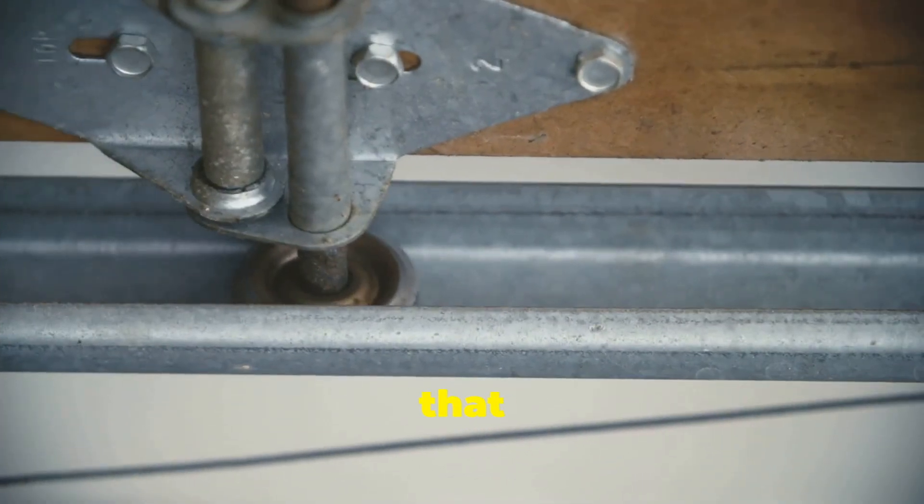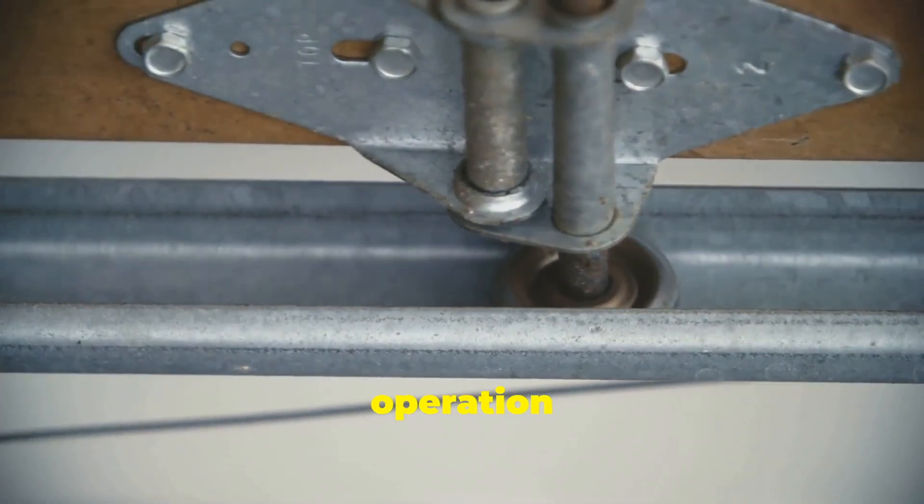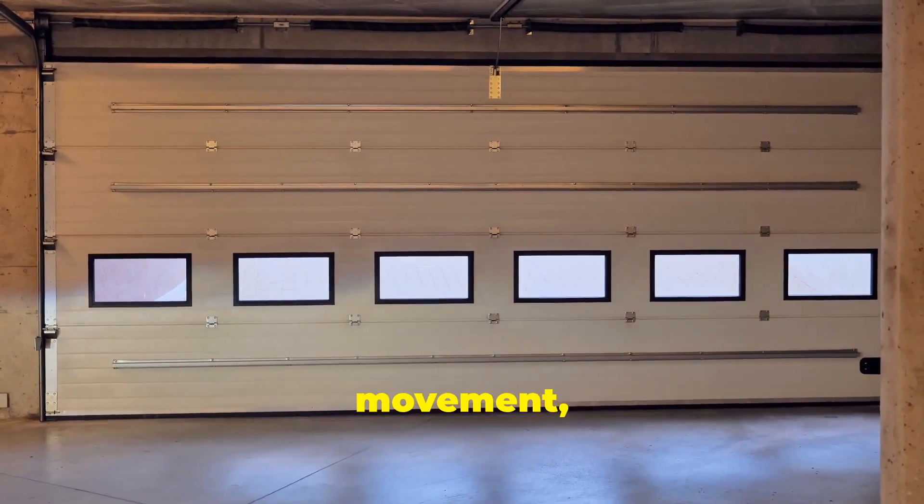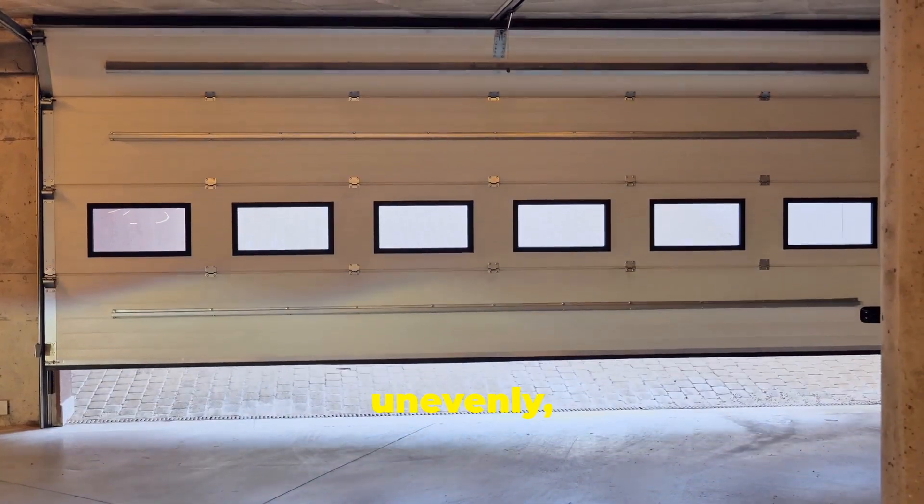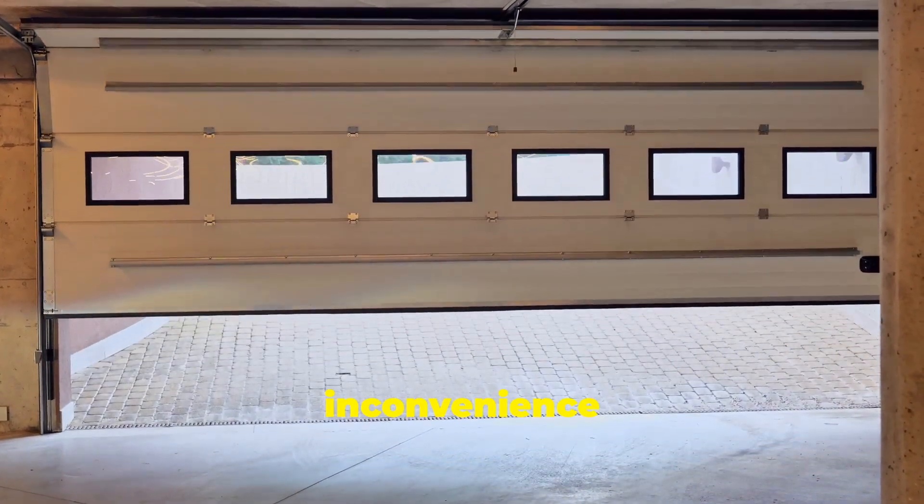In the Horsley area, a common issue that disrupts smooth garage door operation is misaligned or bent tracks. These tracks guide your door's movement, and when they're out of alignment or bent, your door can get stuck or move unevenly, posing both an inconvenience and a safety risk.